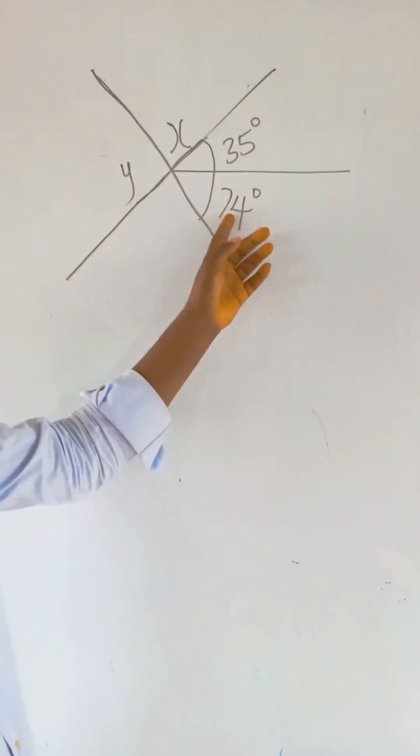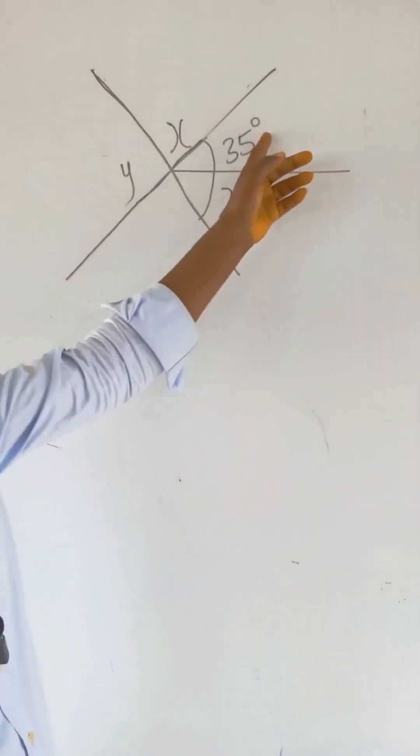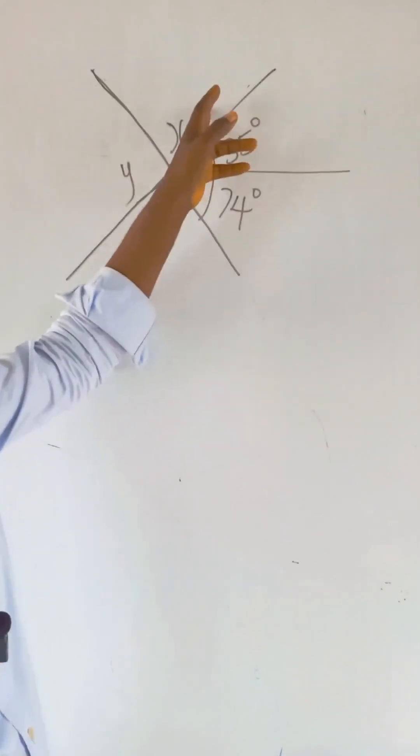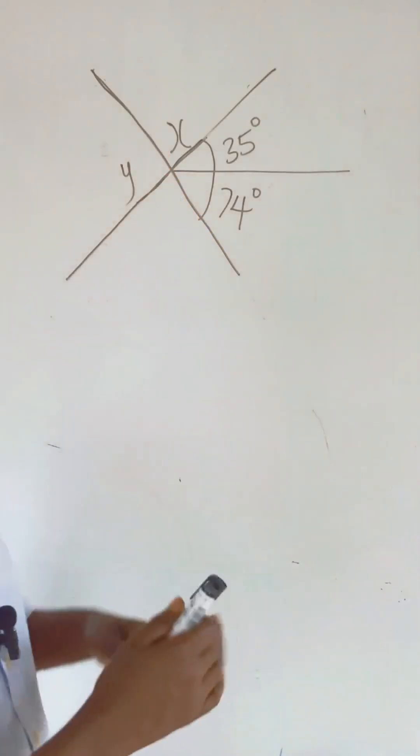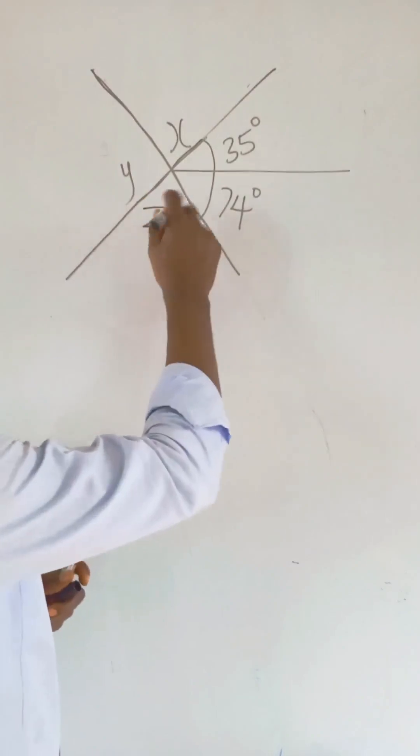We have here 74 degrees, we have here 35 degrees, and we have here X, and we have here Y. And then we can also find this place, we can also call here Z.